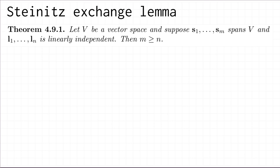The Steinitz Exchange Lemma is not very well named because it's actually a theorem, at least as I've written it. What it says is that if you've got a vector space which has a spanning sequence s_1 up to s_m, and if you've then got any linearly independent sequence l_1 up to l_n, then m must be greater than or equal to n. In other words, the size of a spanning sequence must be greater than or equal to the size of any linearly independent sequence.